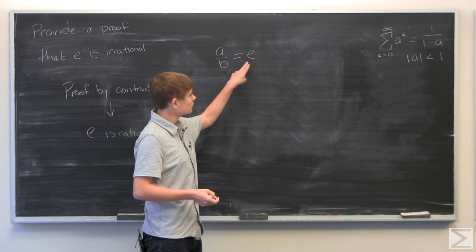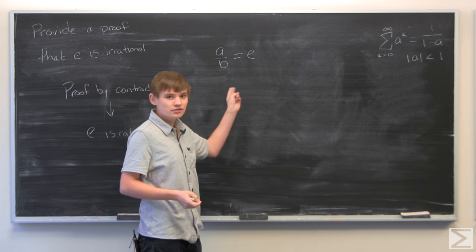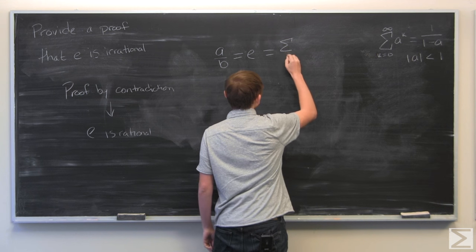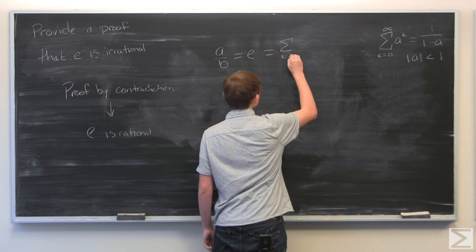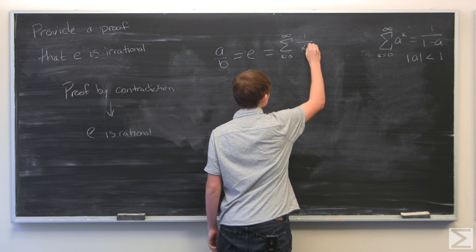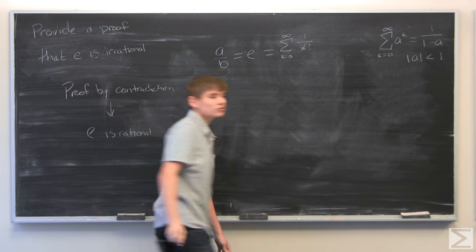And to do this proof, we're going to use the power series notation for e, which is the sum from k equals 0 to infinity of 1 over k factorial.